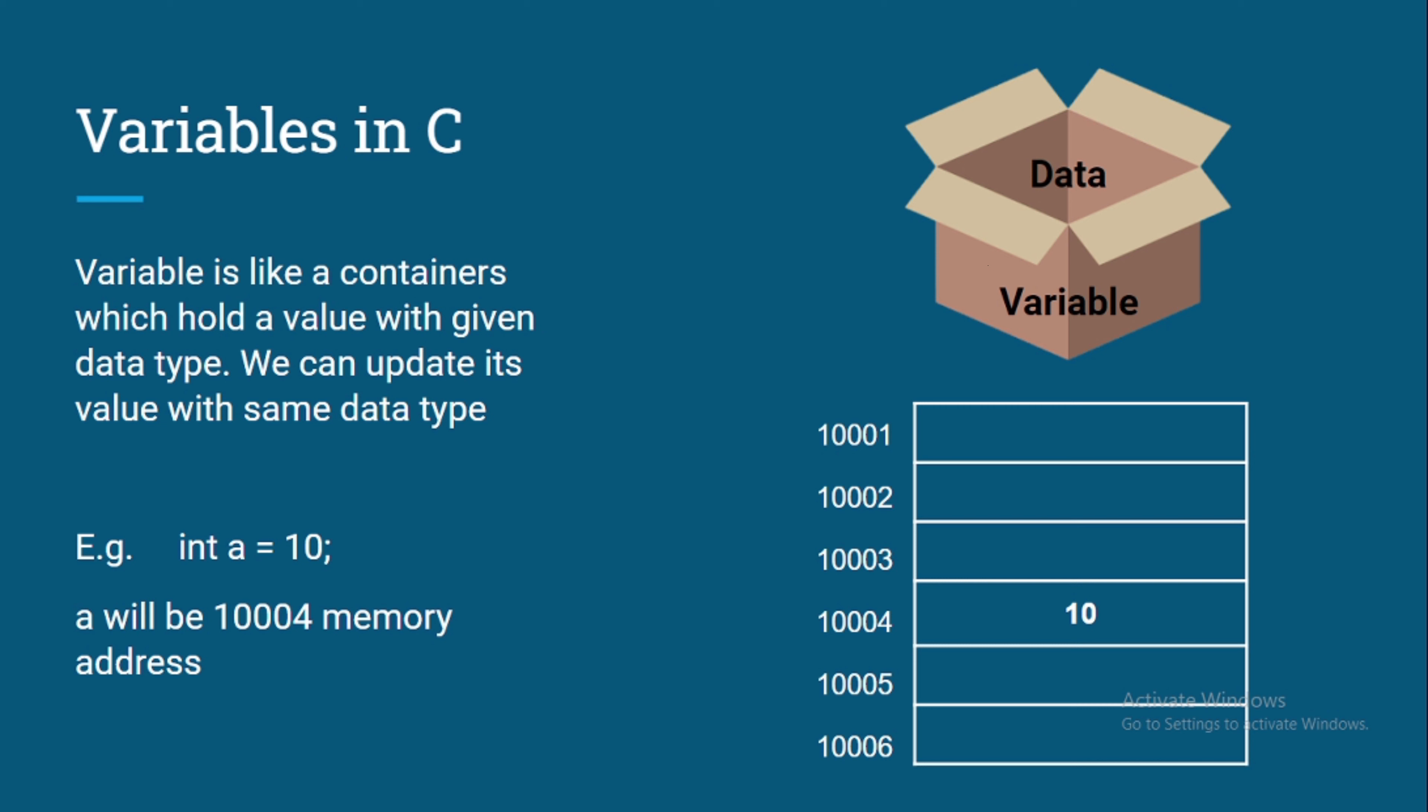So basically in simple words we can say that the variable is a piece of memory where we are storing information with a specific data type. We have a = 10 which means we are storing a memory of a variable with our integer data type and the 10 is storing at 10004 and a will be our reference of 10004.